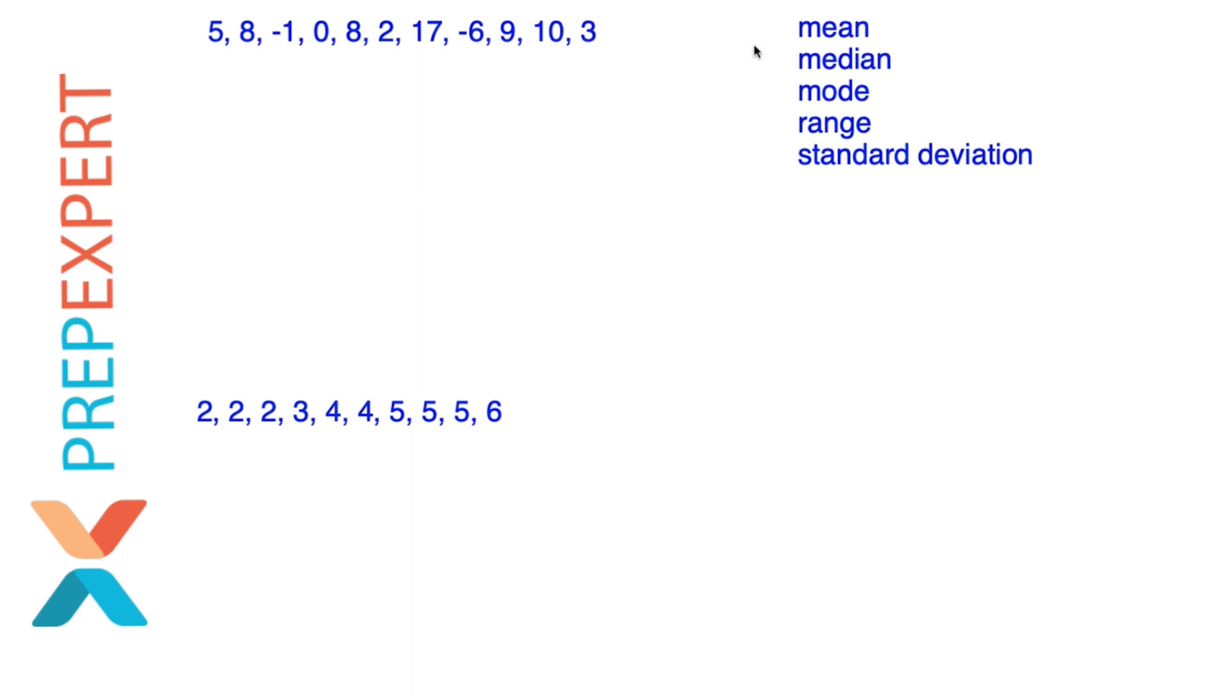When it comes to data sets, we need to be able to calculate several aspects. We need to know how to find the mean, the median, the mode, the range, and we need to be able to at least recognize standard deviation. You don't actually have to calculate standard deviation on the SAT or the ACT, but I'll explain the difference between recognizing it and calculating it in just a moment.